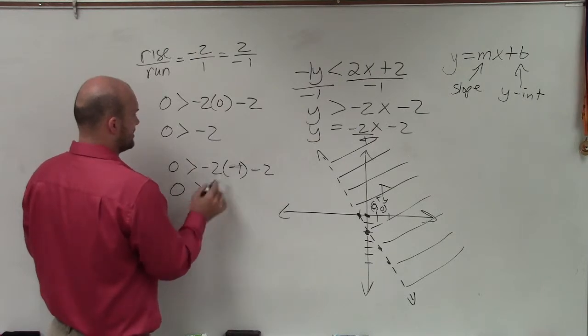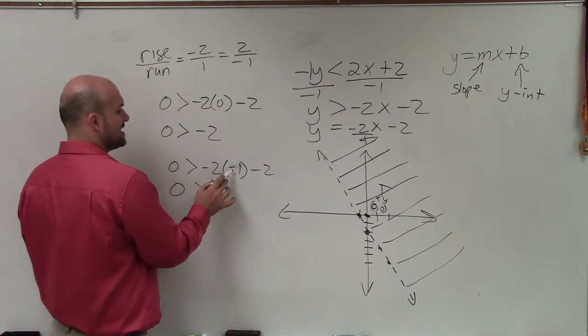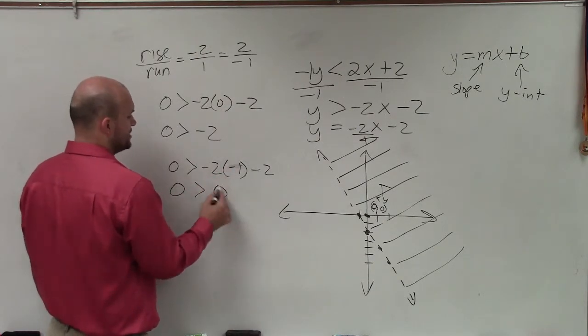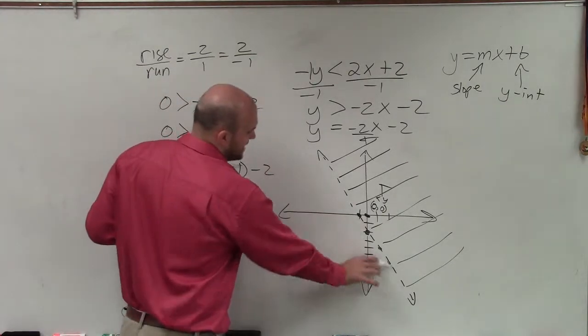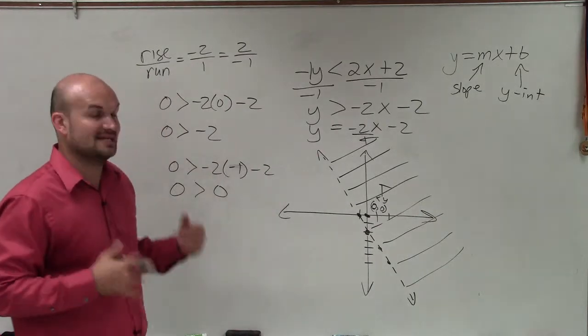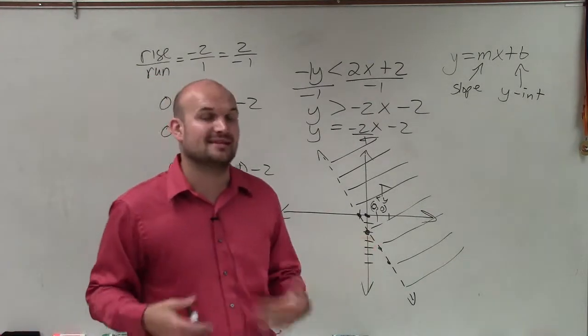So therefore, I get 0 is greater than negative 2 times negative 1 is positive 2. Positive 2 minus 2 is 0. 0 is not greater than 0, so that is false. That's why the line is not a part of the solution, and we represent that as dashed.